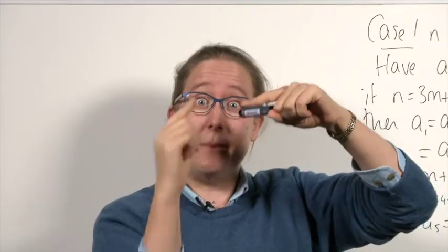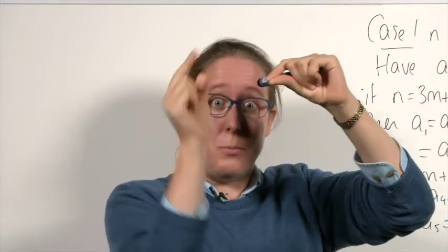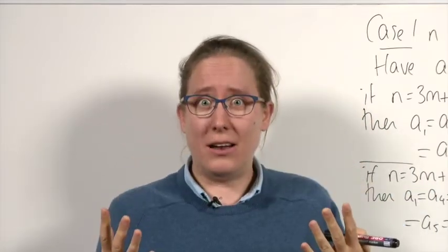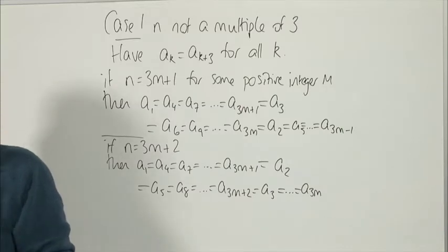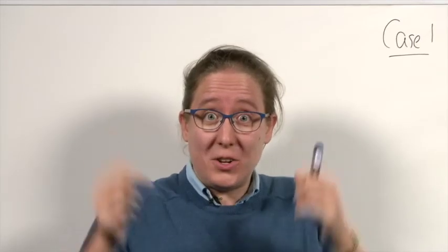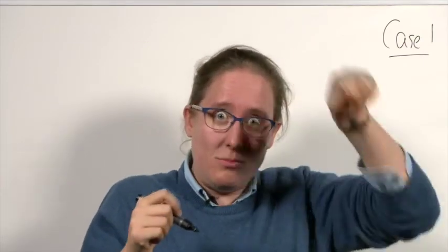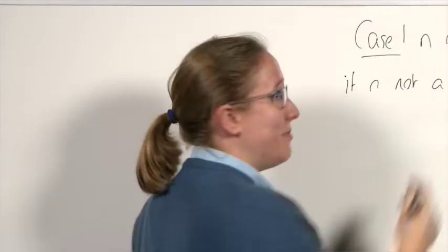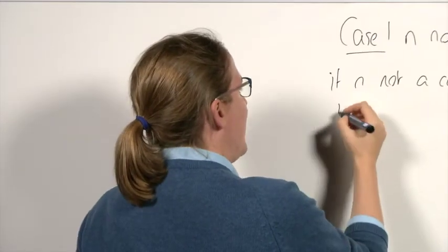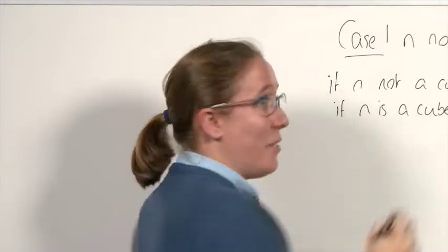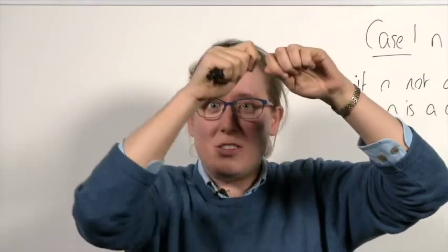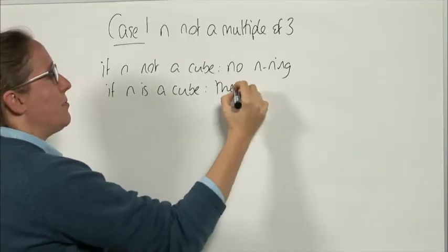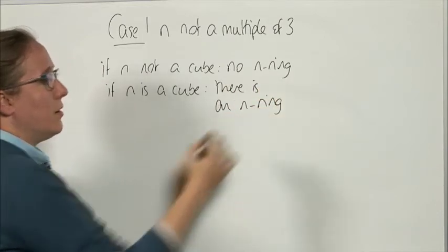Since all numbers are equal to some value, and that value multiplied by its two neighbours (itself three times) must equal n, we need that number cubed to equal n. So n must be a perfect cube. If n is not a cube, there cannot be an n-ring. If n is a perfect cube, then placing the cube root of n at every position does give a valid n-ring — we can verify this works. So we'll count these cases later.